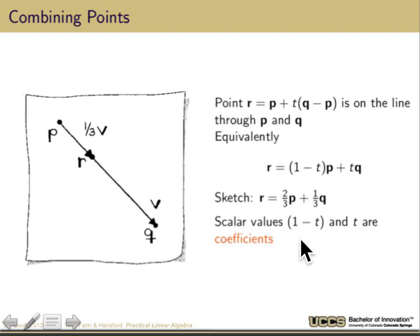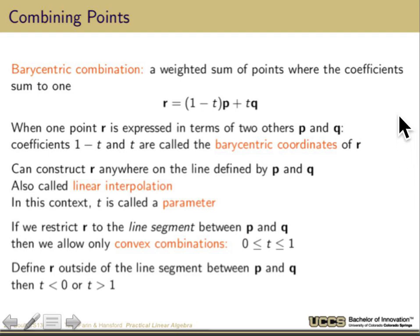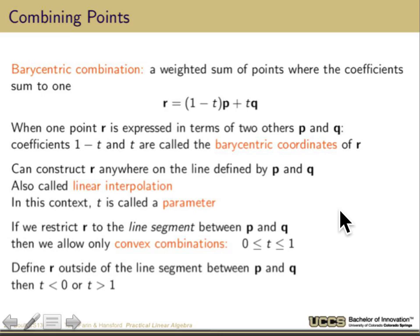The scalar values (1 minus t) and t are called coefficients of the points along this line. That particular set of weightings is called a barycentric combination — a weighted sum of points where the coefficients sum to one. When point r is expressed in terms of two other points, those coefficients are the barycentric coordinates. We can construct r anywhere on the line defined by p and q, which is called linear interpolation. If r is between p and q, we may call it linear interpolation; outside that range it's called extrapolation. When t is between 0 and 1, restricting r to the line segment, those are convex combinations — we go from p when t = 0 to q when t = 1.